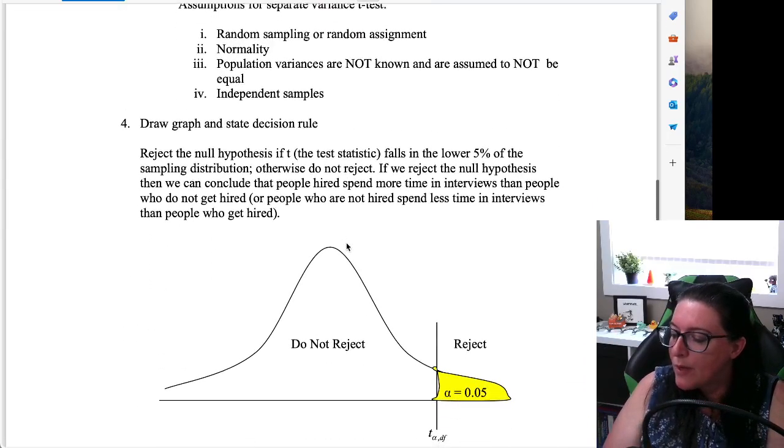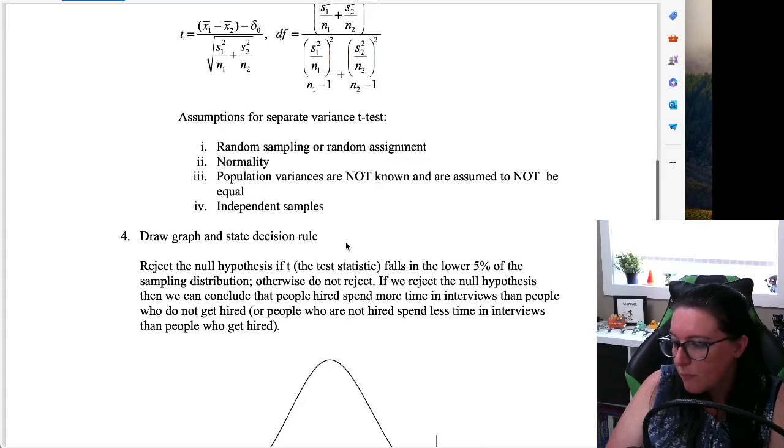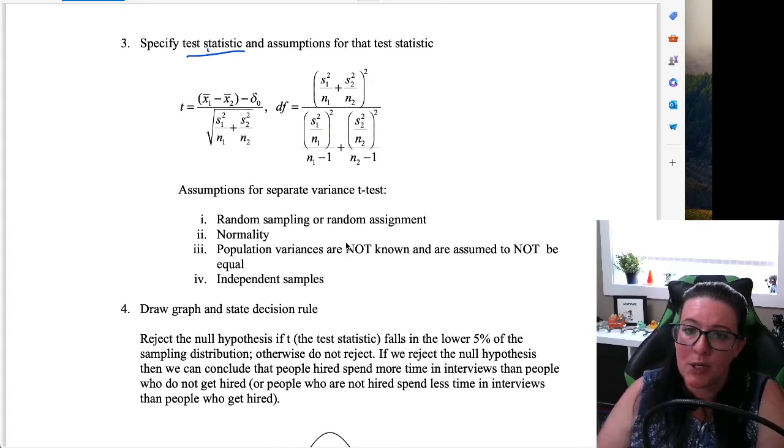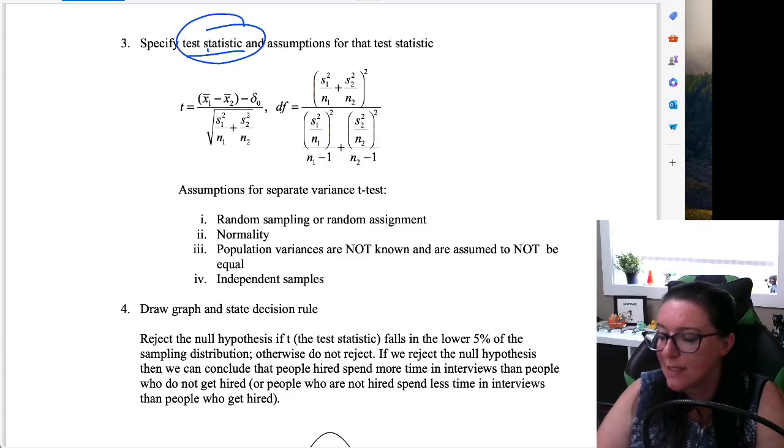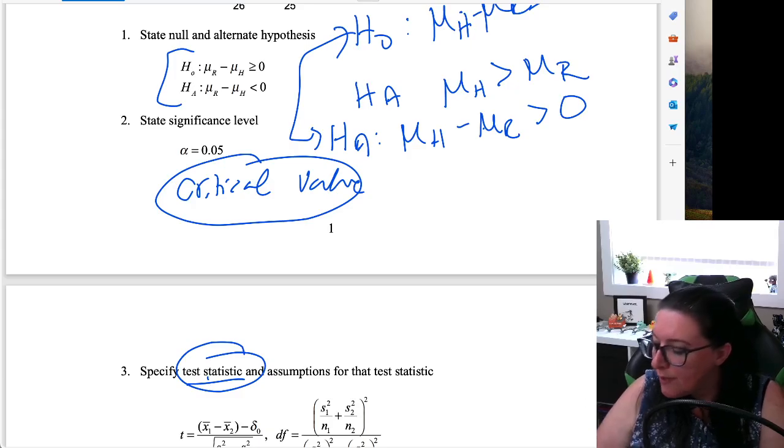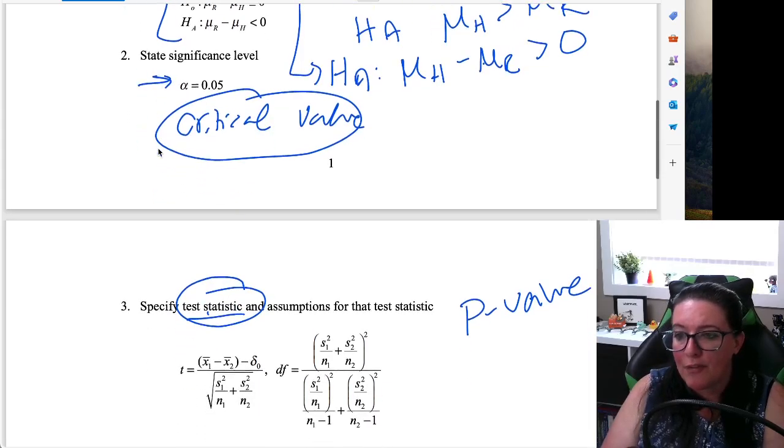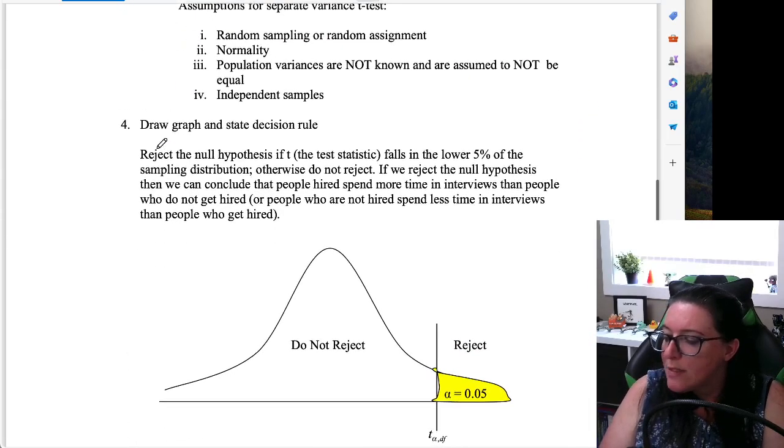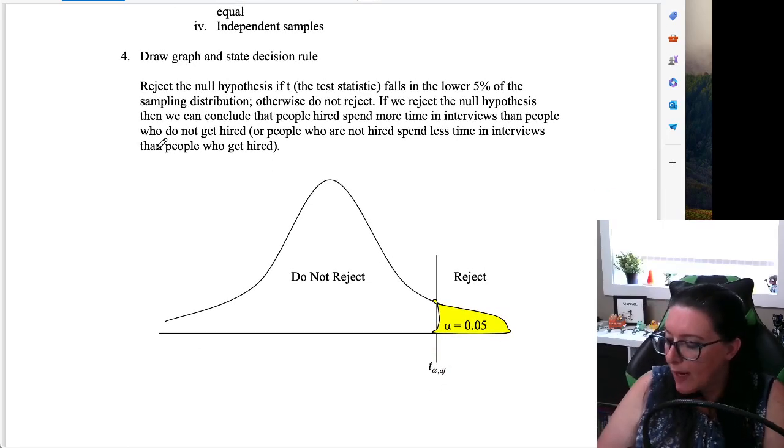The next thing we want to do is draw a graph and state our decision rule. So we'll do this calculation where we do our test statistic in Excel or Python, and we compare our test statistic and our critical value. Alternatively, we can get a p-value and compare it to alpha. When we do that, we will then be able to make a decision.